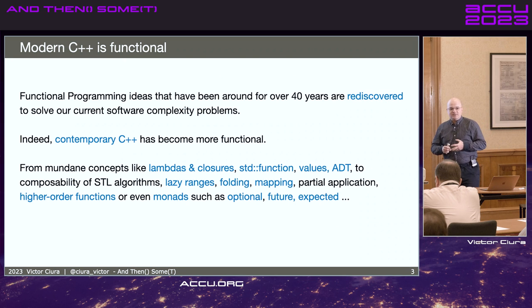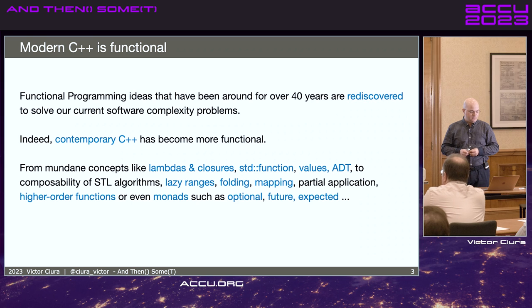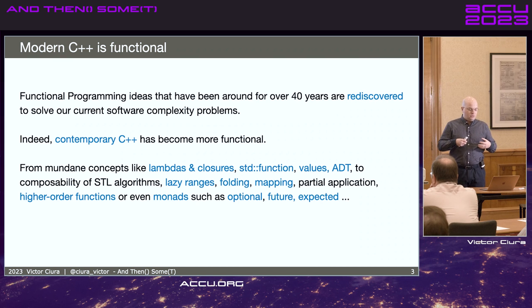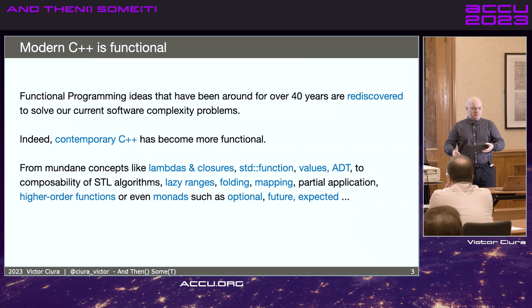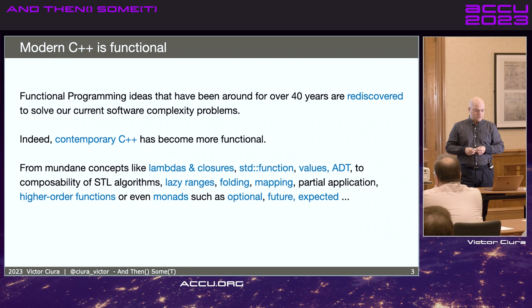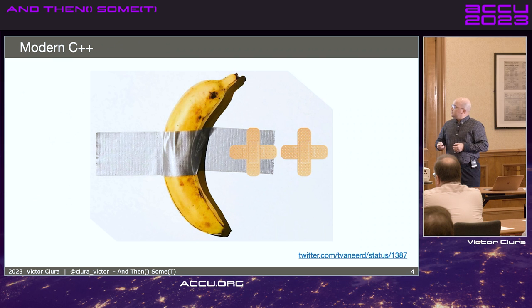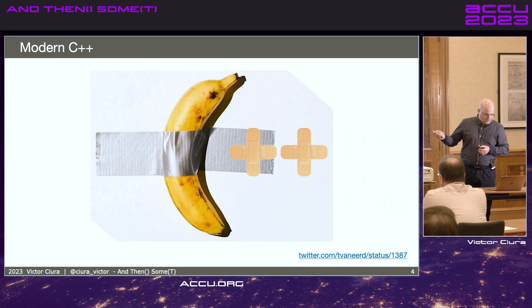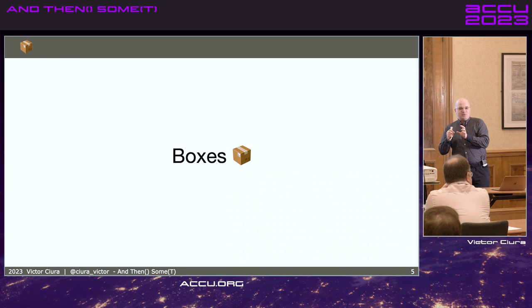Modern C++ has become more functional. We've been adopting old ideas for over 40 years now, some of them, and gradually incorporating them in modern C++ from mundane things like closures and algebraic data types to folding, mapping, partial applications, ranges, lazily evaluated ranges, and composition of course. I'm going to talk about boxes, much more simple things.